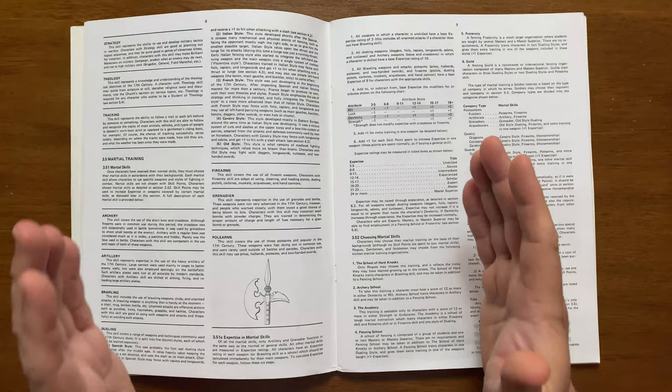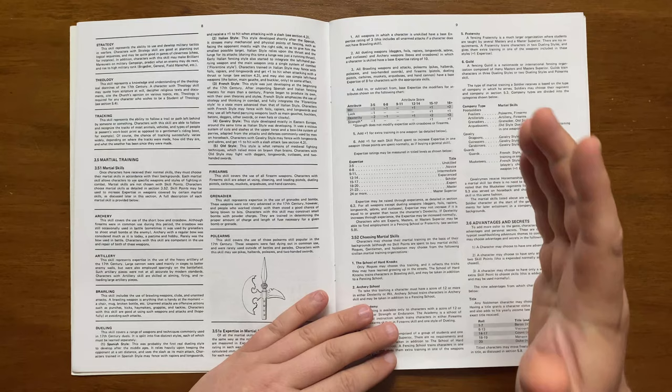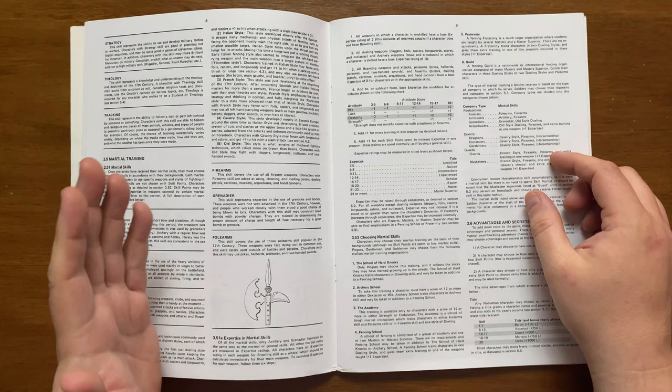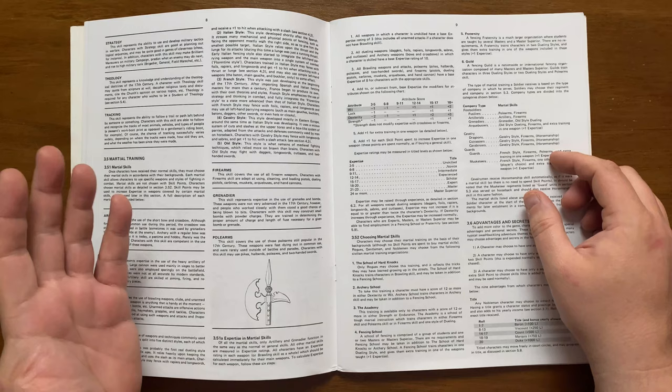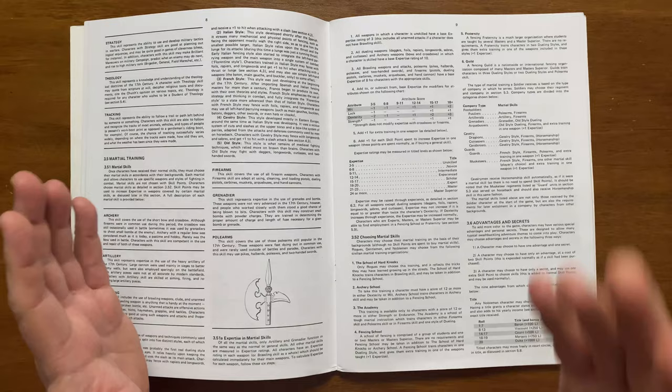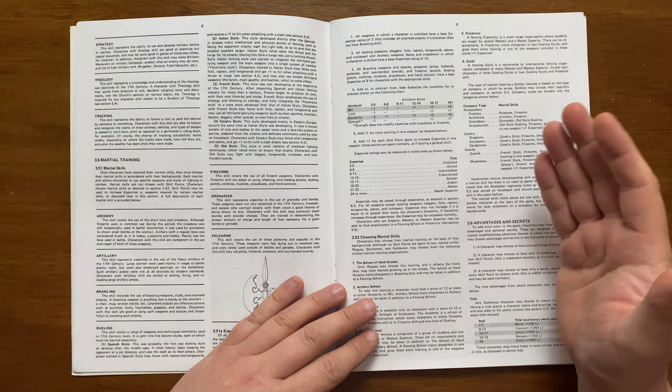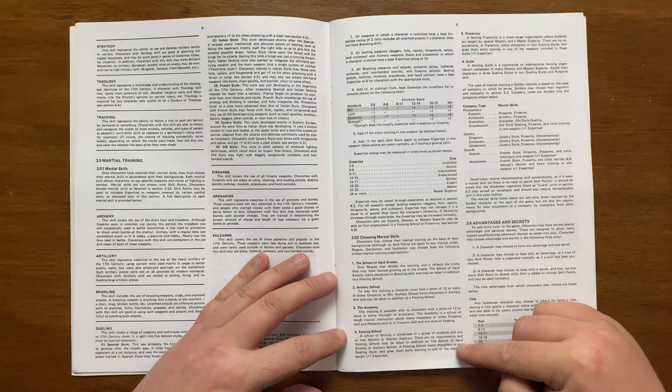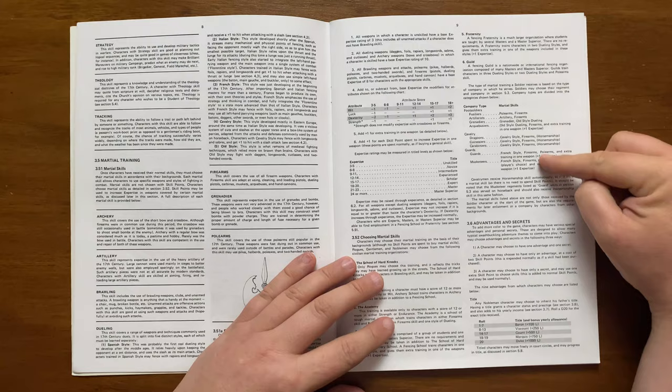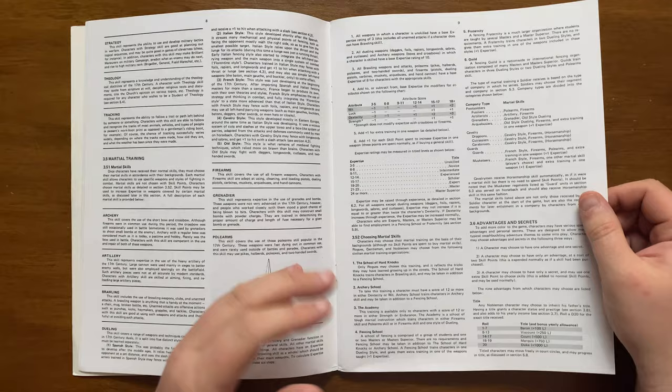It talks about expertise and martial skills. This is measured in ratings from 3 to 5 to 24+, which is detailed in this table. All weapons that a character is unskilled with have a base expertise of 3. Dueling weapons and archery weapons have a base expertise of 10, and all brawling weapons, pole arms and firearms have a base of 8. Expertise is modified by wit, luck, dexterity and strength. Expertise can be increased with skill points. Their martial skills can also be chosen by their background, through the school of hard knocks, archery school, the academy, fencing school, a fraternity or a guild. Soldiers gain training in weapons based on their company type listed in this table.